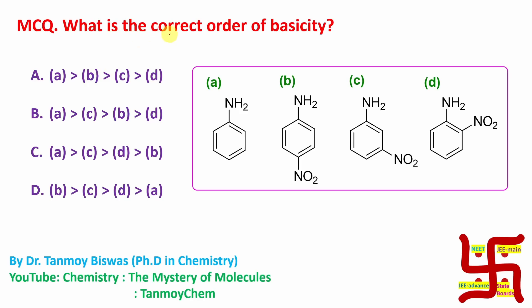So the question is what is the correct order of basicity? If you look at what I am asking, all are actually amines, so all nitrogen have one lone pair. So who can donate this lone pair efficiently to H+? That is actually basicity. Who can donate its lone pair efficiently to the H+? Now question, who can donate? Obviously, who has more electron density? They can donate.